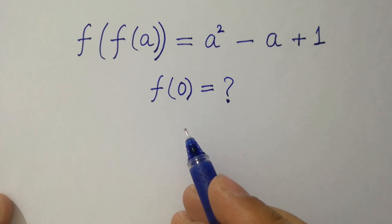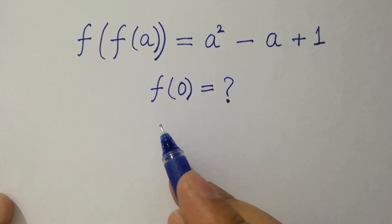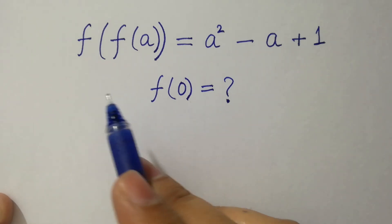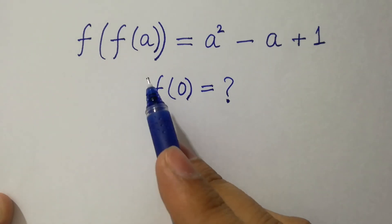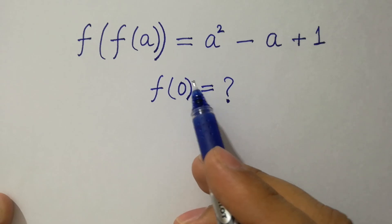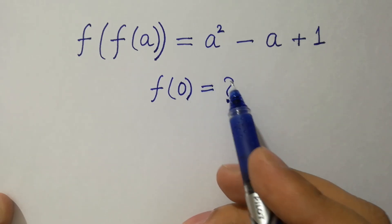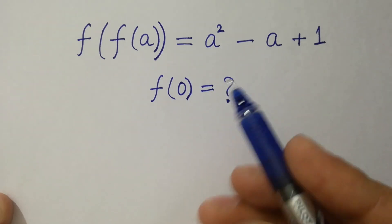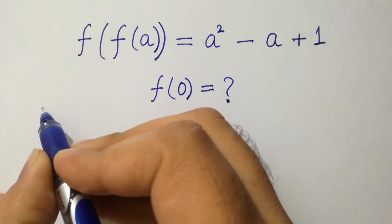Hello friends. Find f of 0 if f of f of a equals a squared minus a plus 1. Let's have a solution.